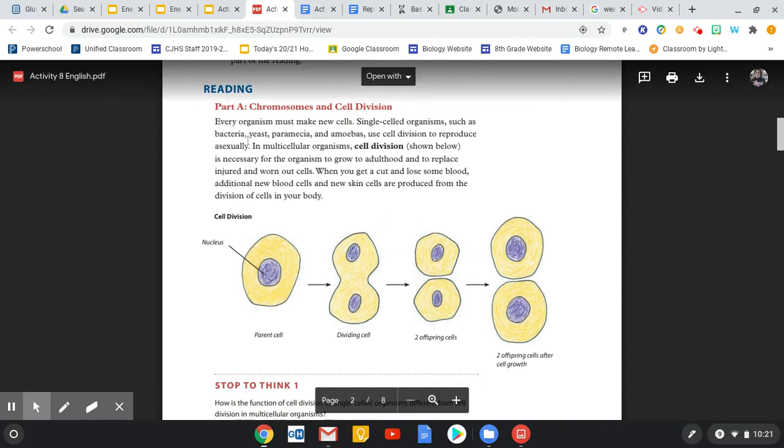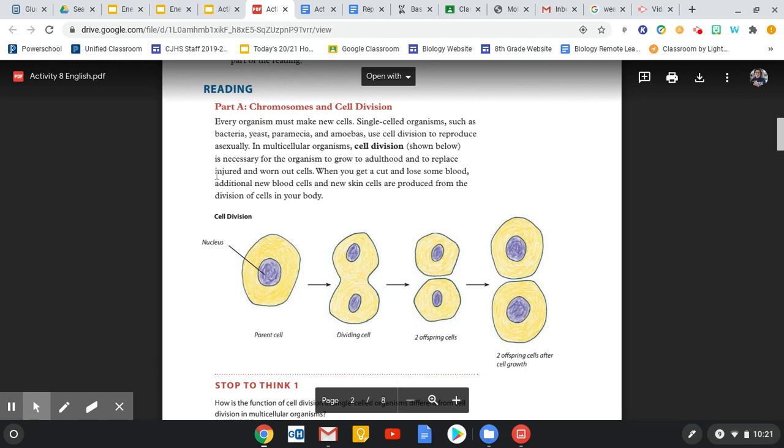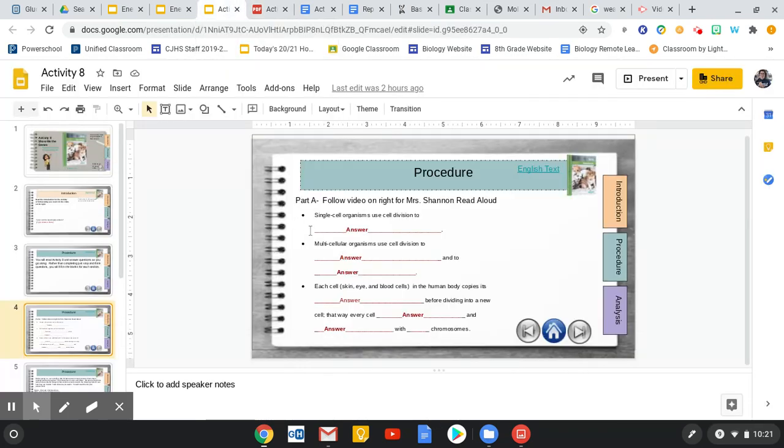So in single-celled organisms, cell division occurs for one purpose, and that's to reproduce asexually, to make clones. In multicellular organisms, cell division occurs to grow to adulthood and replace injured and worn-out cells. So single-celled organisms use cell division to, and now you can answer this one, multicellular organisms use cell division to blank and to blank. So there's two reasons.